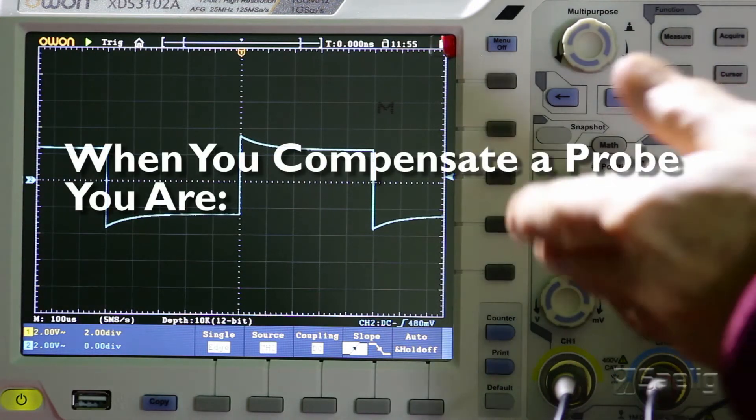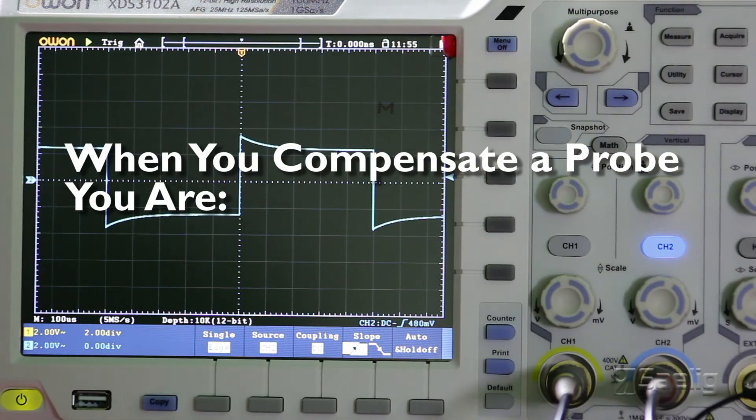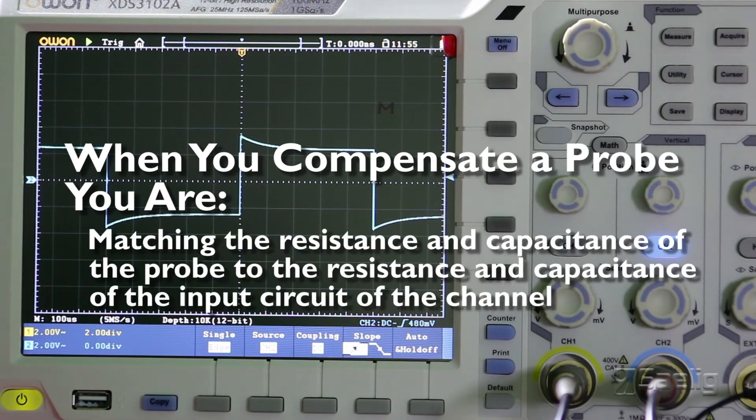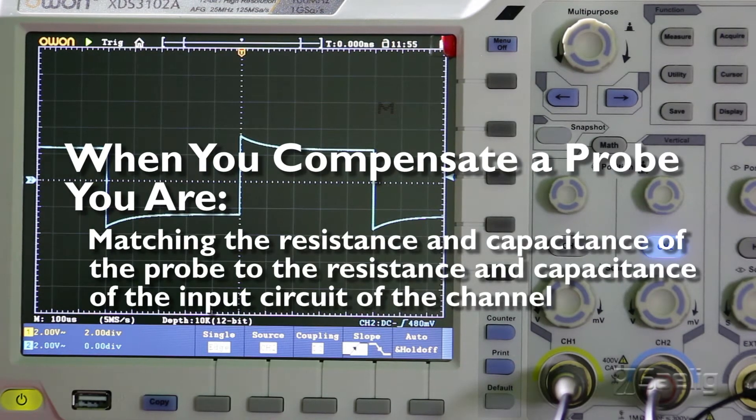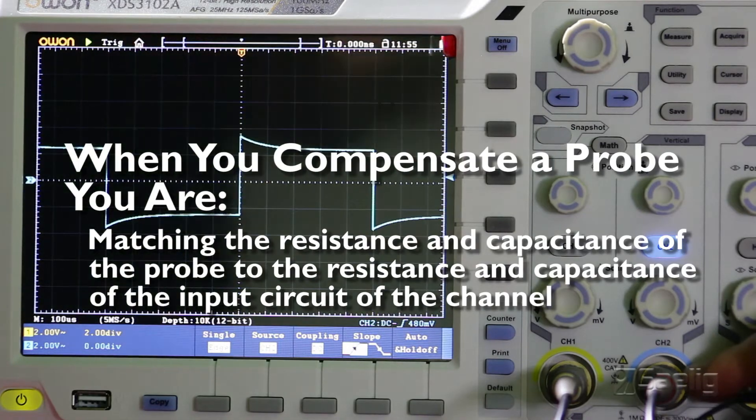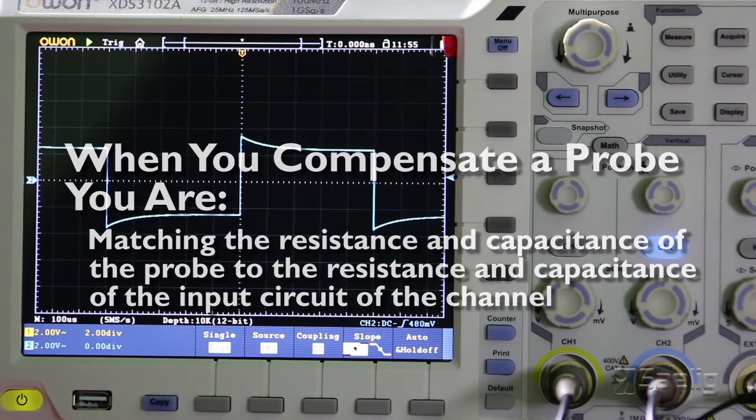Whenever you're trying to compensate your probe, what you're doing is you're matching the resistance and capacitance of the probe to the resistance and capacitance of the input circuit on this particular channel.